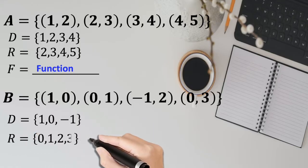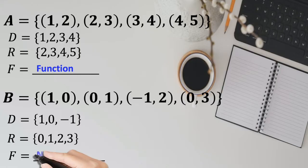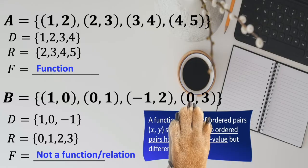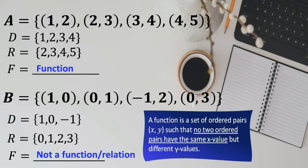For this example, this is a relation or not a function because from the definition, a function is a set of ordered pairs X and Y such that no two ordered pairs have the same X value but different Y values.